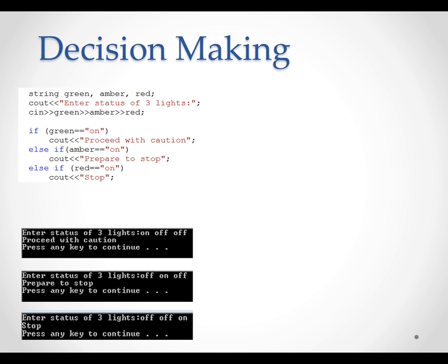In the if-else chain, we need to evaluate a series of conditions, such as green light double equals string 'on'. Only when a condition is evaluated to be true or one, the action will be taken. If the condition is evaluated to be false or zero, the action will not be carried out.